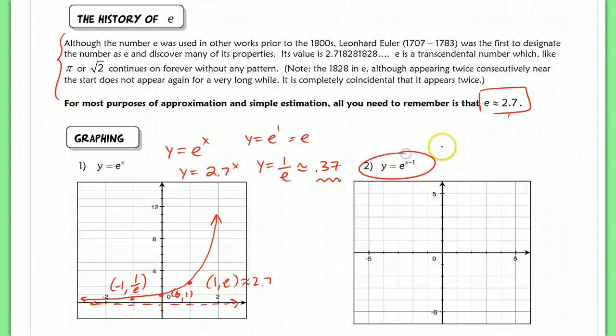So when we graph y equals e to the x minus 1, we know from yesterday that this is just going to move this right one unit. So we move everything to the right one unit. So now we have a point at 1, 1. We have a point at 2, e. So about, let's see here, it's a little bit low for 2.7. Let's put it about right there. And we have the point 0, 1 over e. We're just shifting everything to the right one. So we graph that. We still have our horizontal asymptote here at y equals 0.